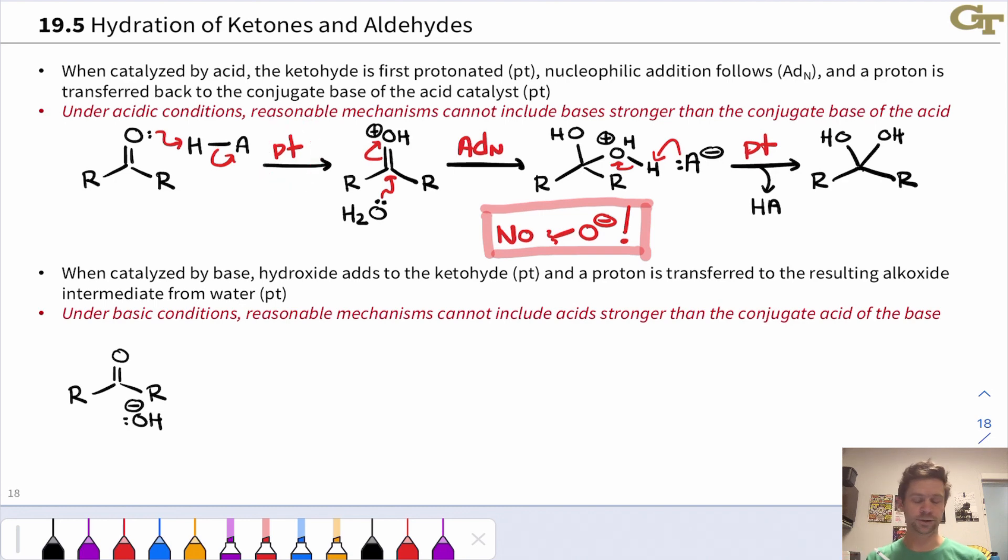I want you to notice the general pattern here. First, we put a proton on the carbonyl substrate, which is the electrophile in the reaction. Then the nucleophile added, and this is what I like to call the business step. And finally, another proton transfer took a proton off of the nucleophile and generated the neutral product and regenerated the catalyst. So there's this general pattern of the proton goes on, the business occurs, and a proton comes off.